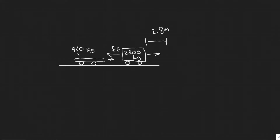In this problem, we're told a 920kg sports car collides into the rear end of a 2,300kg SUV stopped at a red light. The bumpers lock and the brakes are locked, and the two cars skid forward 2.8 meters before stopping. The police officer, estimating the coefficient of kinetic friction between the tires and the road to be 0.8, calculates the speed of the sports car at impact. What was the speed?